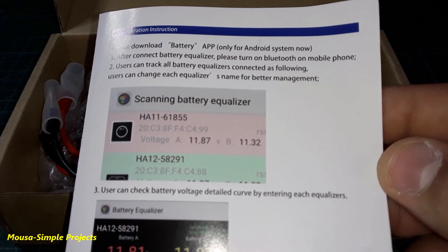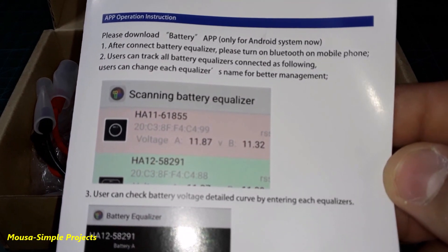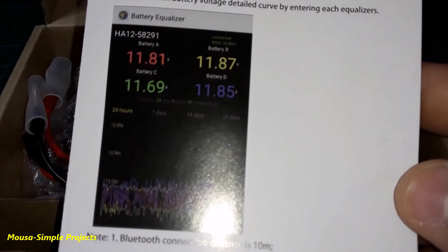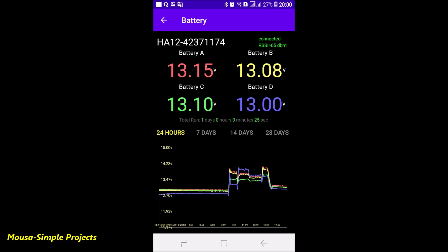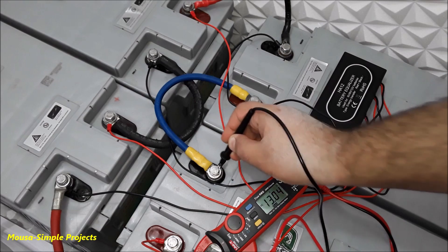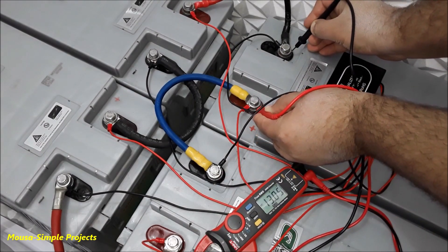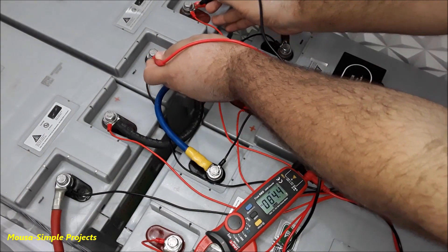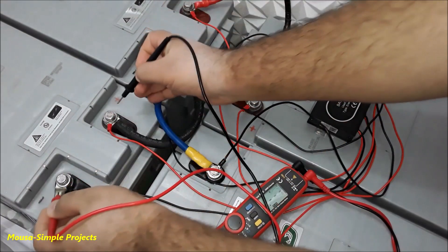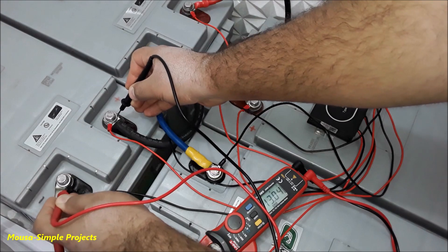As I said before, this battery equalizer has Bluetooth connection to show you the voltage of each battery on your Android mobile. But it is useless because the voltage reading is not accurate. As you can see here, it shows you the voltage of each battery different than the other. But my multimeter reads a balanced voltage of 13V for each battery. So the battery equalizer itself is working well, but the voltage reading via Bluetooth connection is not accurate.